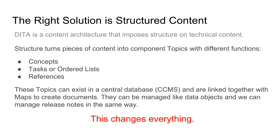These topics might have different functions — concepts to explain what something is, tasks to explain a procedure, troubleshooting topics, or references with data sheets. The topics exist in a centralized database and get linked together with things called maps, which are really just a way of creating a table of contents. We started managing this content more like data instead of styled content, and we got a lot of automation potential, content reuse, workflow benefits, and centralization. It changed everything.